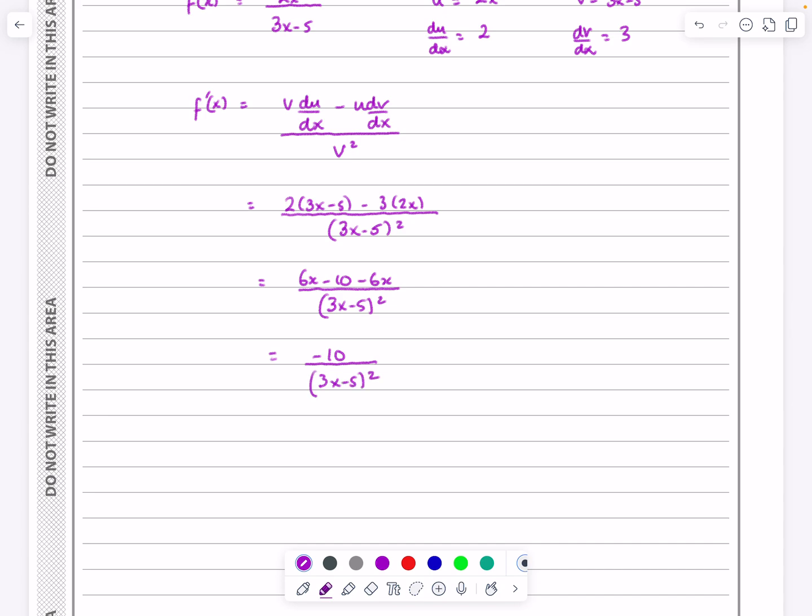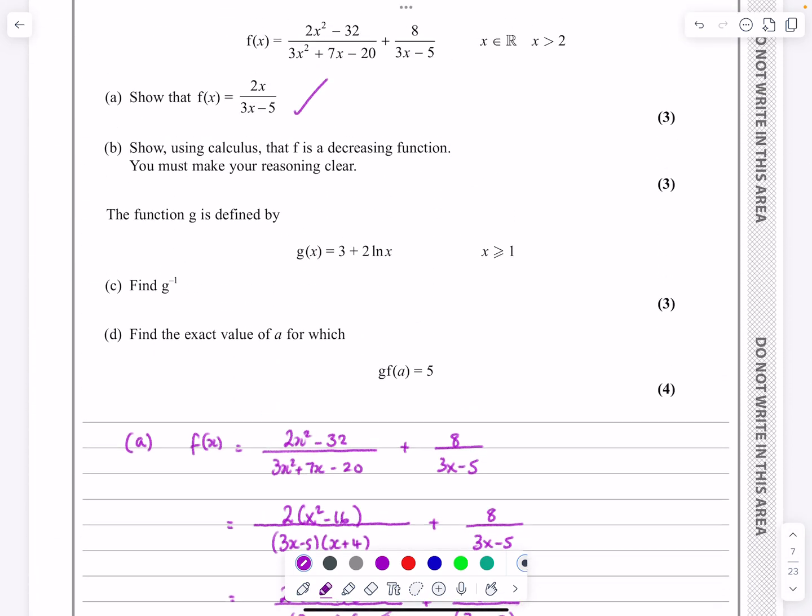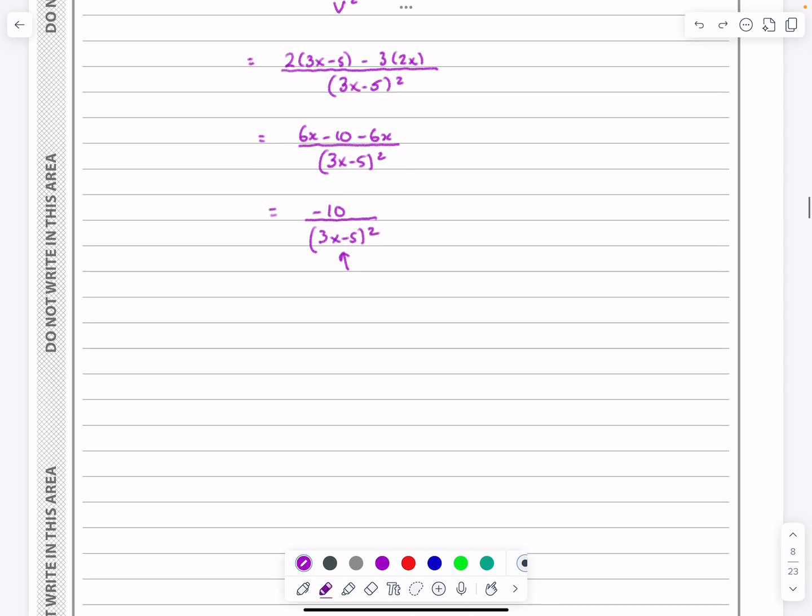Which is then going to give me minus 10 over 3x minus 5 squared. And now because it's just minus 10, what we can now say is that this part is squared is always going to be positive or greater or equal to 0. It can't be 0. x is greater than 2 on this one here.